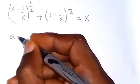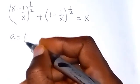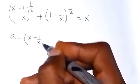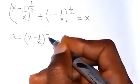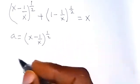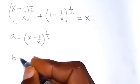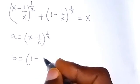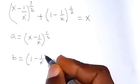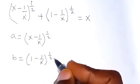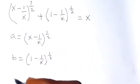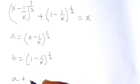Let A be equal to the first term, which is (x minus 1/x) raised to the power of one half. And let B be equal to the second term, which is (1 minus 1/x) raised to the power of one half. So when we write this equation again in terms of A and B, we have A plus B equals x.